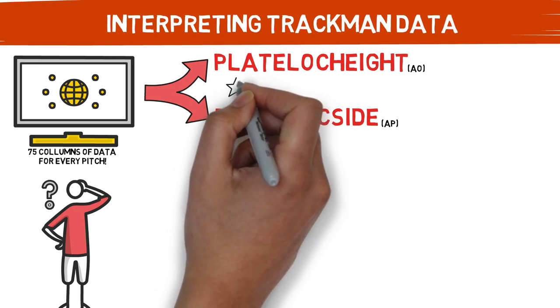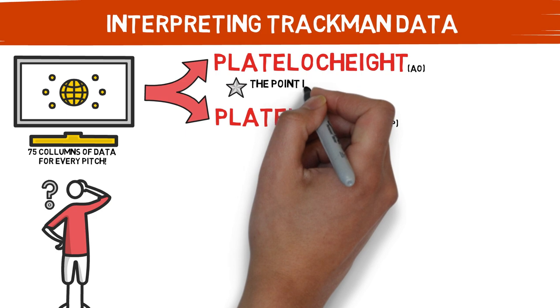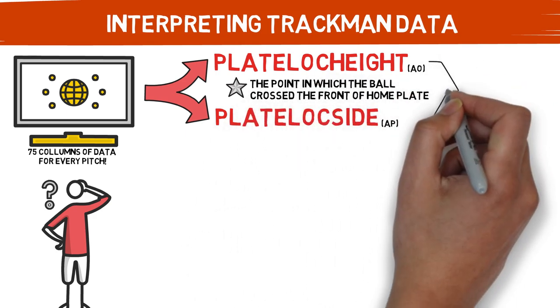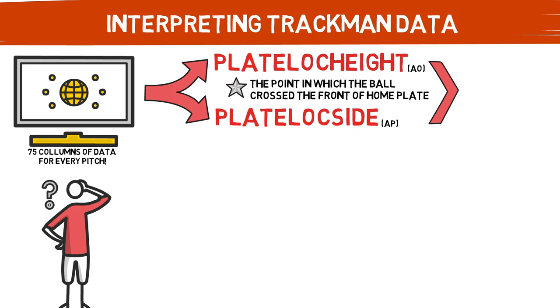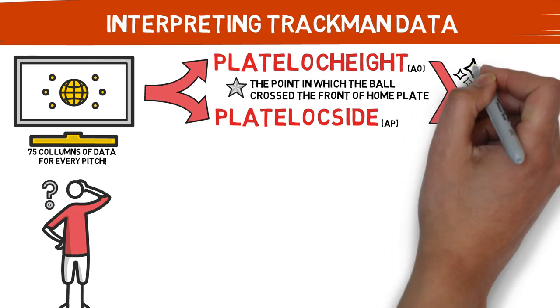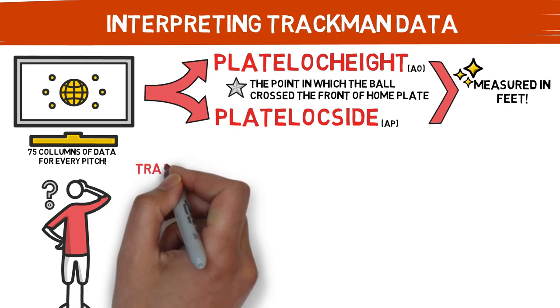As you would imagine, these two stats measure exactly where in space each pitch was when it crossed home plate. It's important to note that these two columns are measured in feet. So 1.5 would be 1.5 feet or 18 inches, not 1 foot and 5 inches.